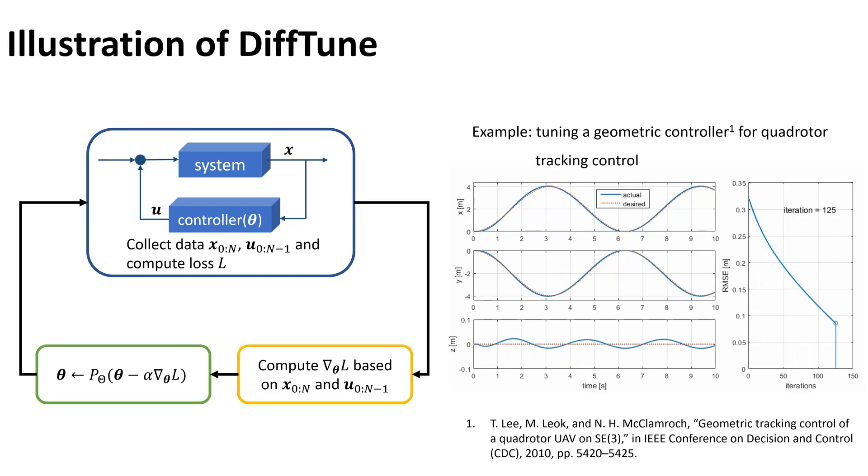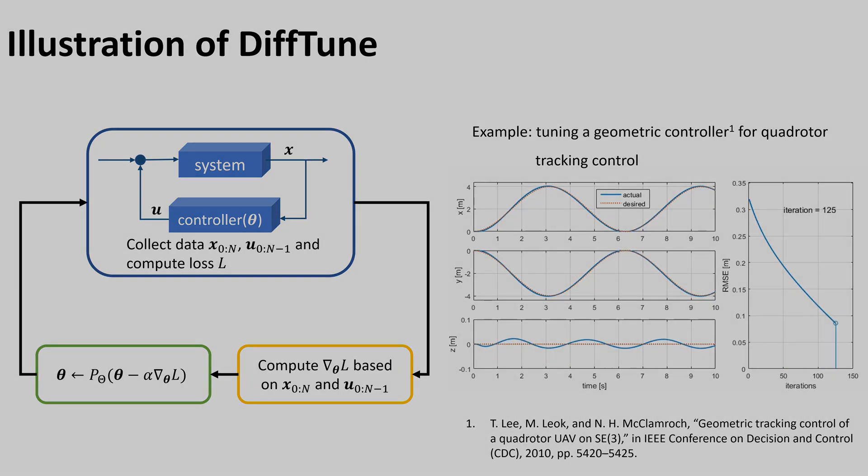The animation on the right shows an example of tuning a controller for quadrotor tracking control. It can be observed that the actual closed-loop trajectory is approaching the desired trajectory through iterations. Correspondingly, the tracking error shows monotone reduction.